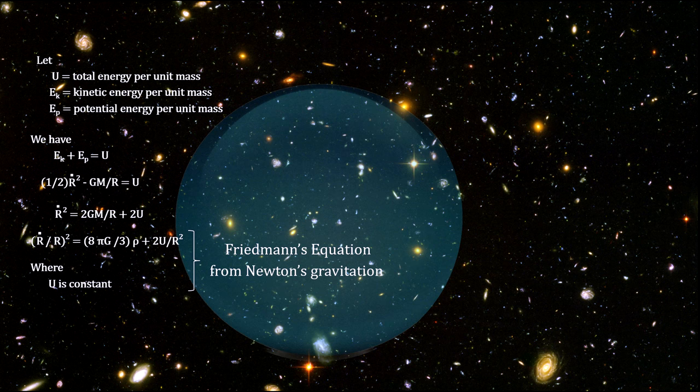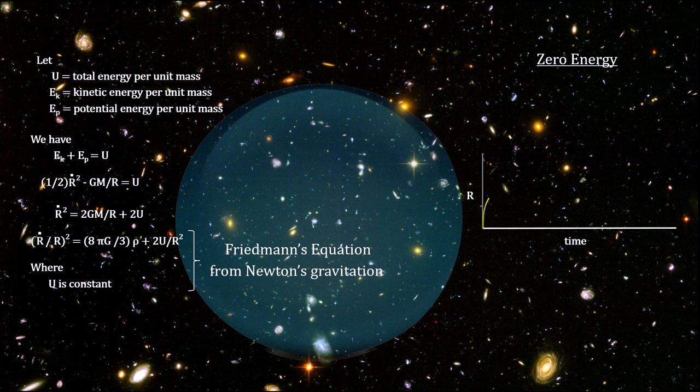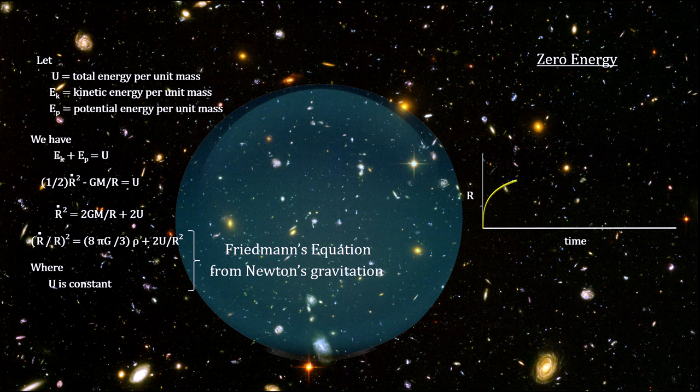The constant u in the equation represents the total energy per unit mass at the surface of the expanding sphere. There are three possibilities for this constant. It will be zero if the kinetic energy is equal to the gravitational binding energy.